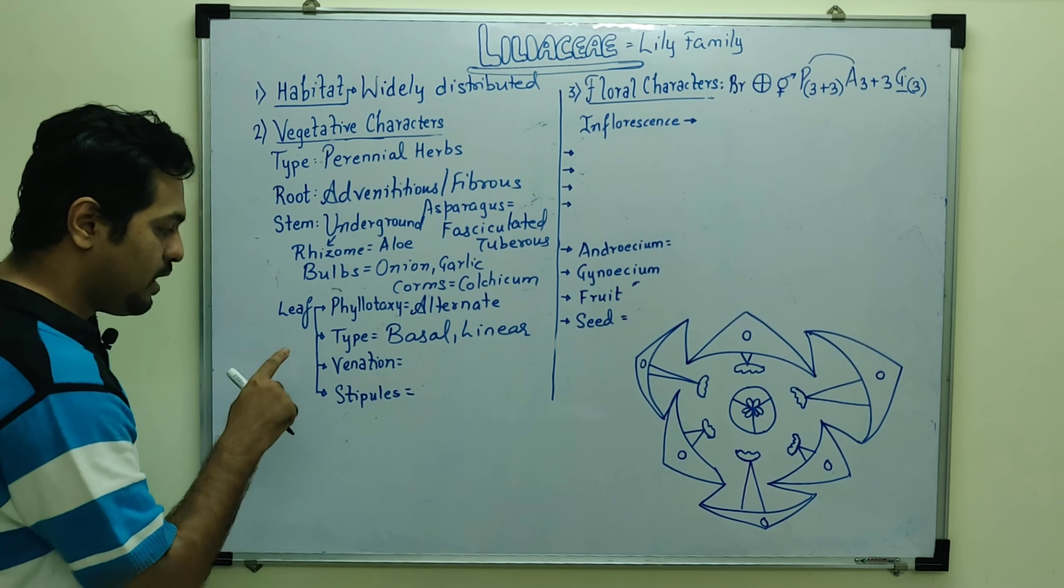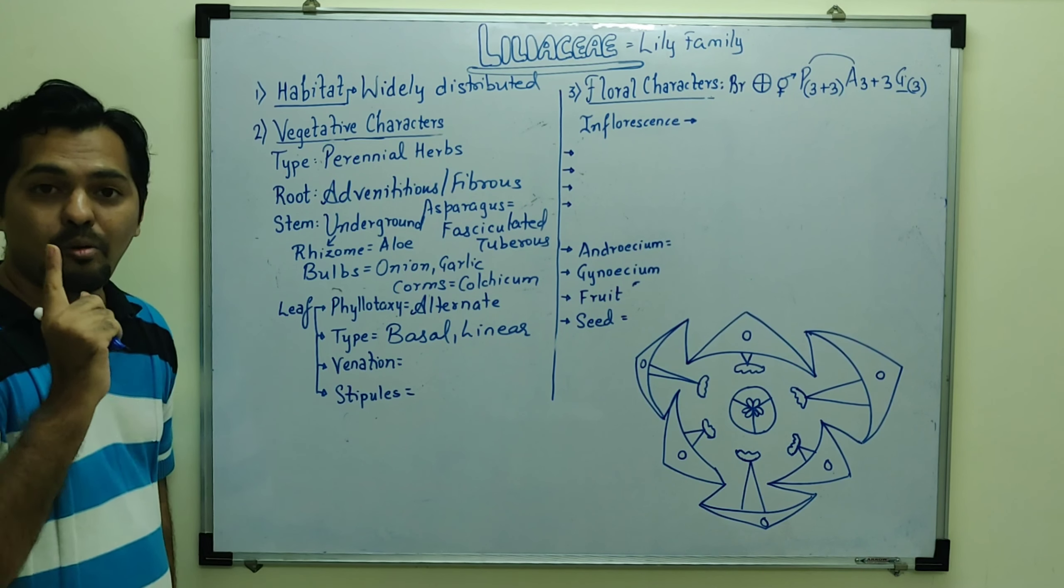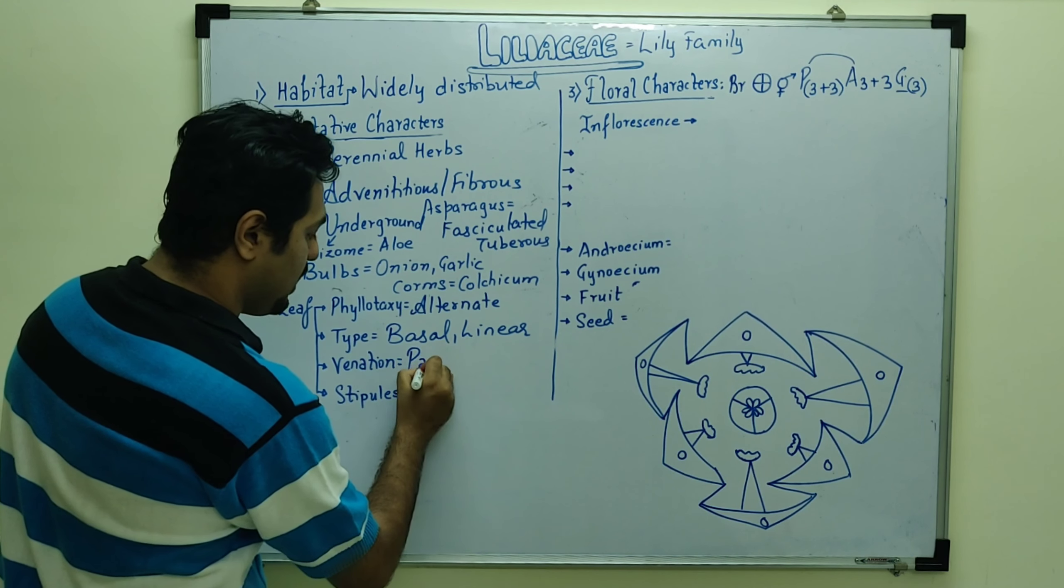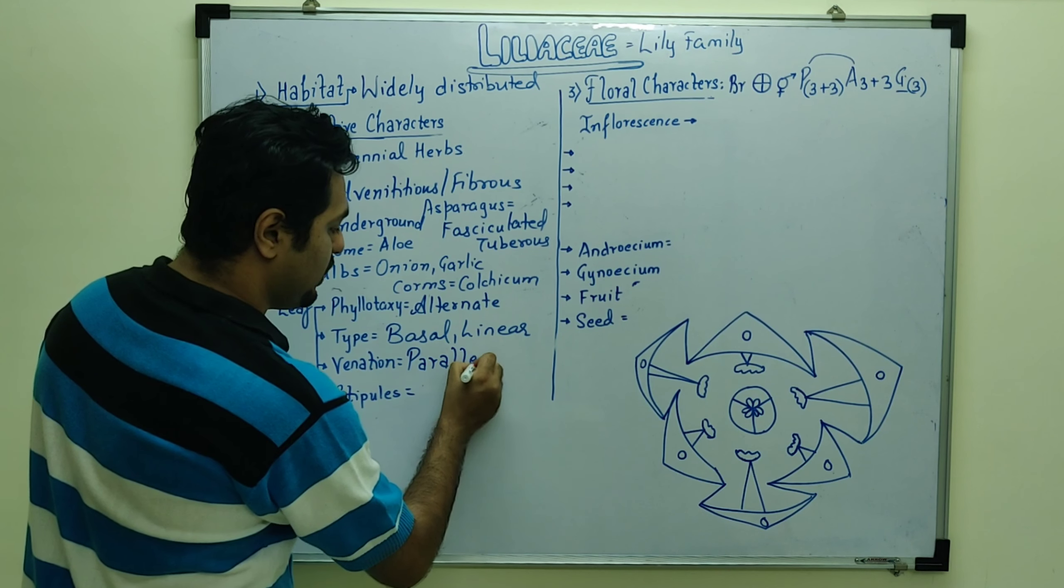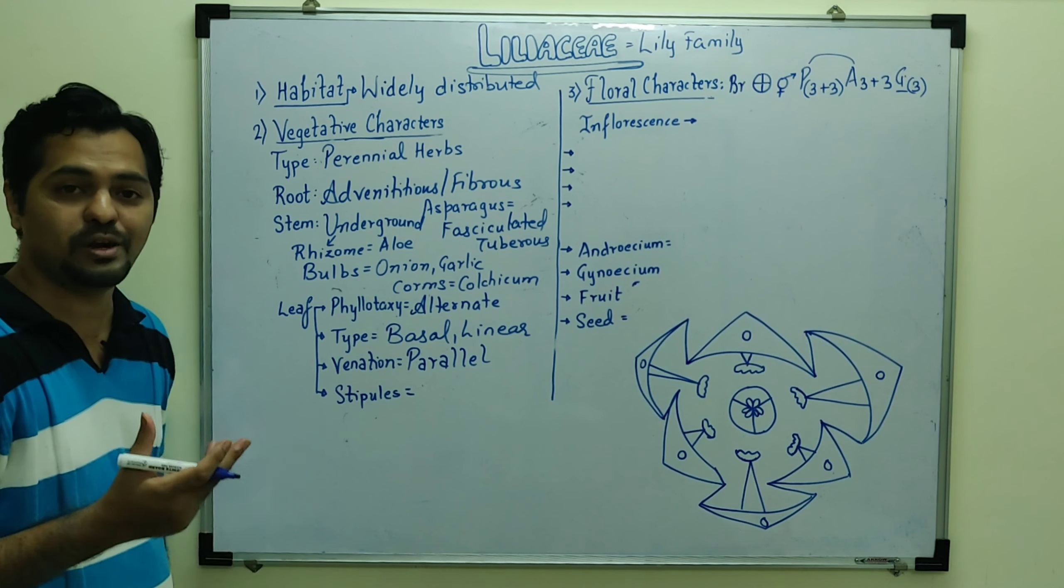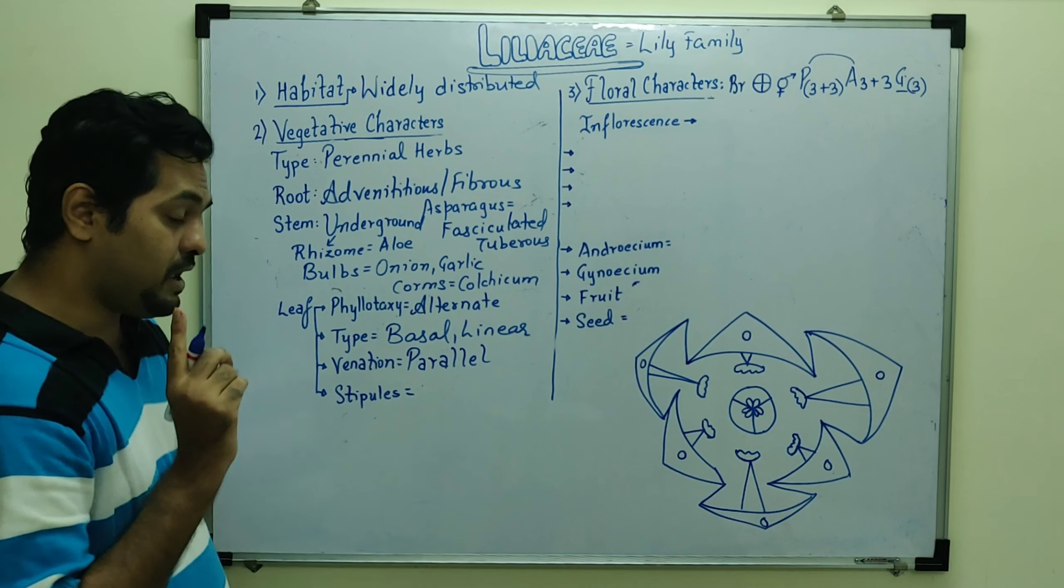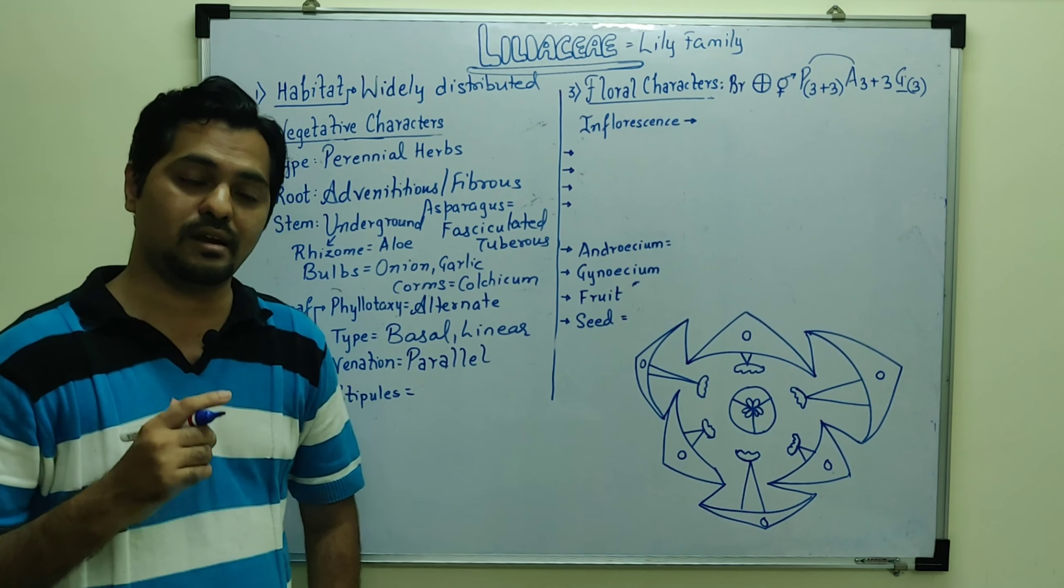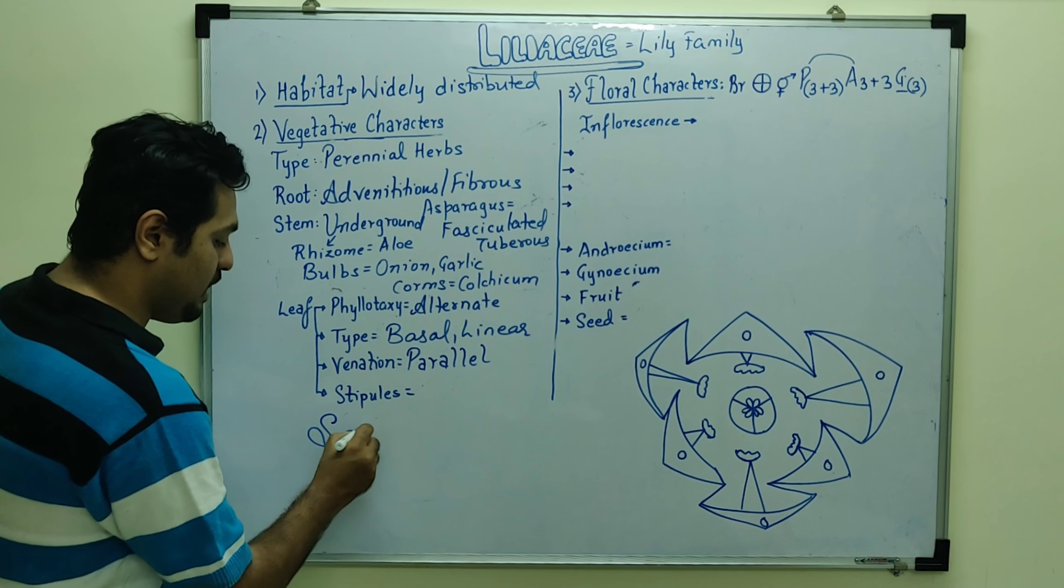In Fabaceae, type of leaf, compound leaf, imparipinnate. Solanaceae, mostly simple leaf. Venation, since this is monocot, we can see here parallel venation. In Fabaceae, Solanaceae, reticulate venation.